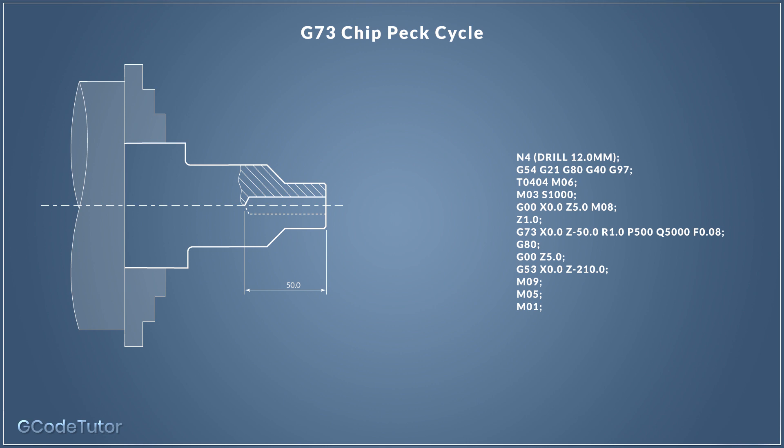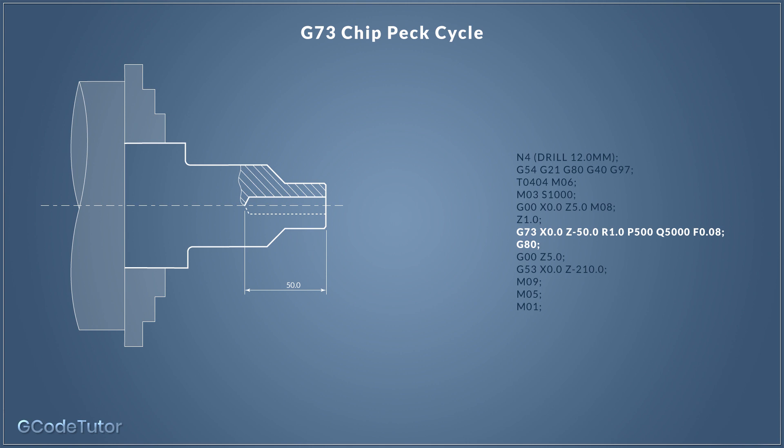Our G73 chip peck cycle looks like this inside our program. G73 calls the cycle. X is the centerline of the component. Z is the final depth of bore. R is our retract value between each peck — in this case, one millimeter, so we pull the drill back one millimeter and then start drilling again. Our dwell time P500 would dwell for half a second. Q is our depth of peck — we remove five millimeters of material before the drill pulls back one millimeter and starts cutting again. Finally, our feed rate is 0.8 millimeters per revolution, and we cancel the cycle with G80 on the following line.